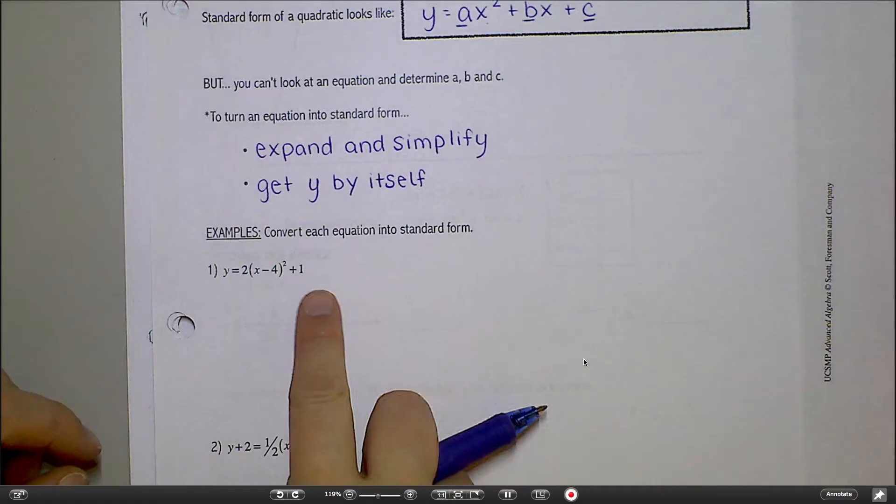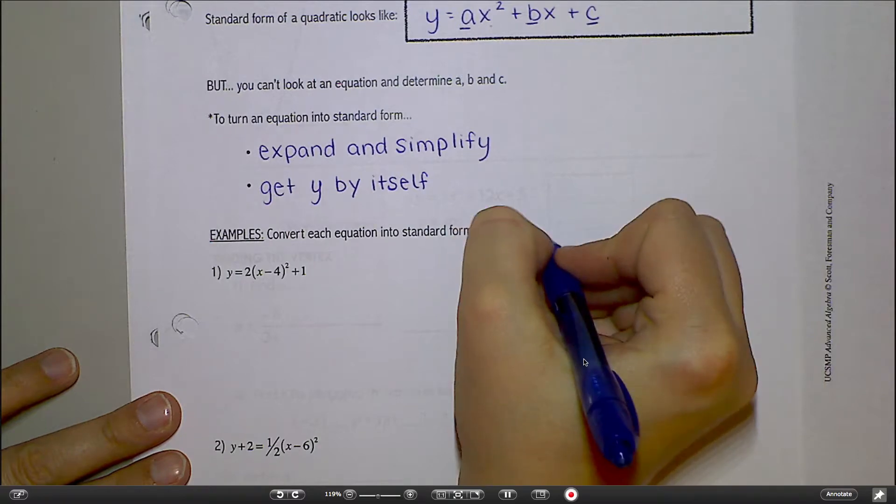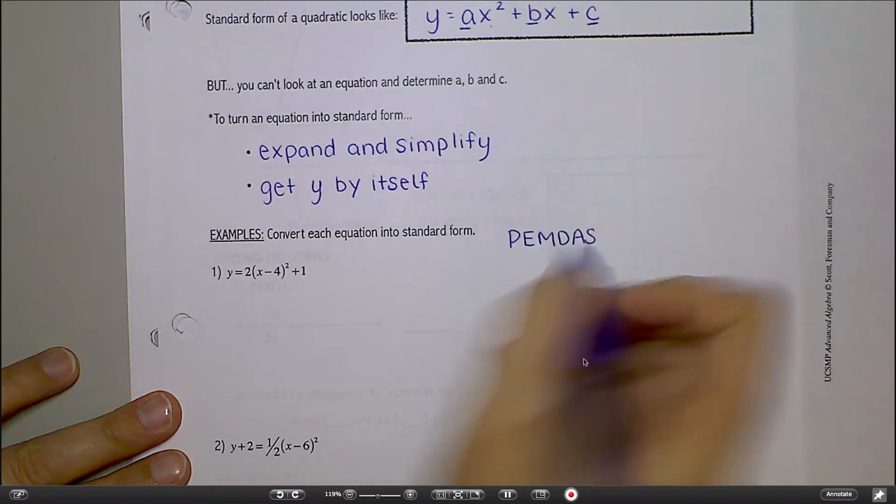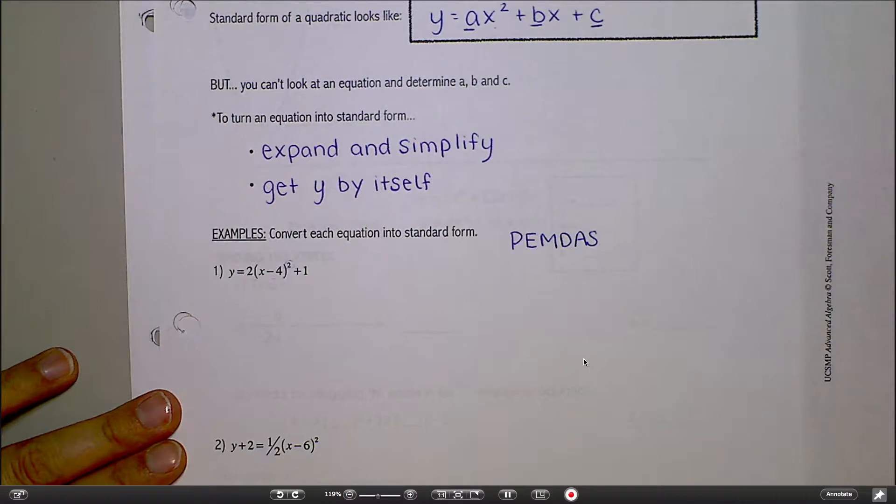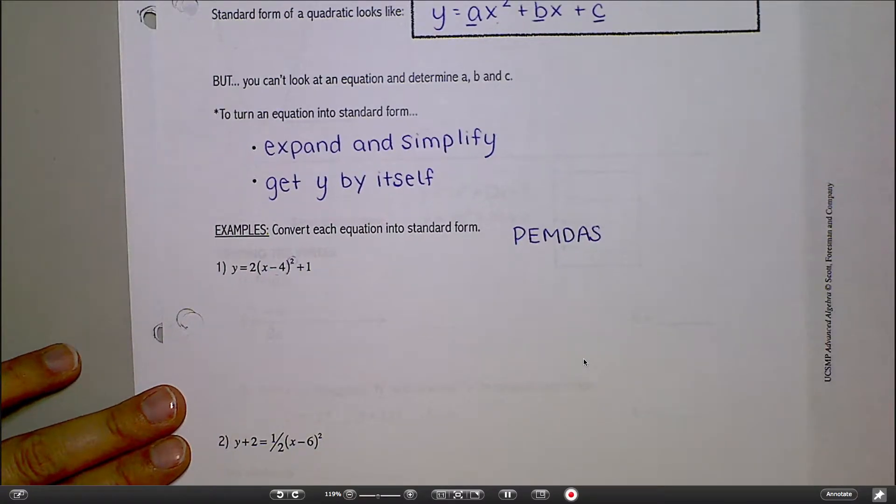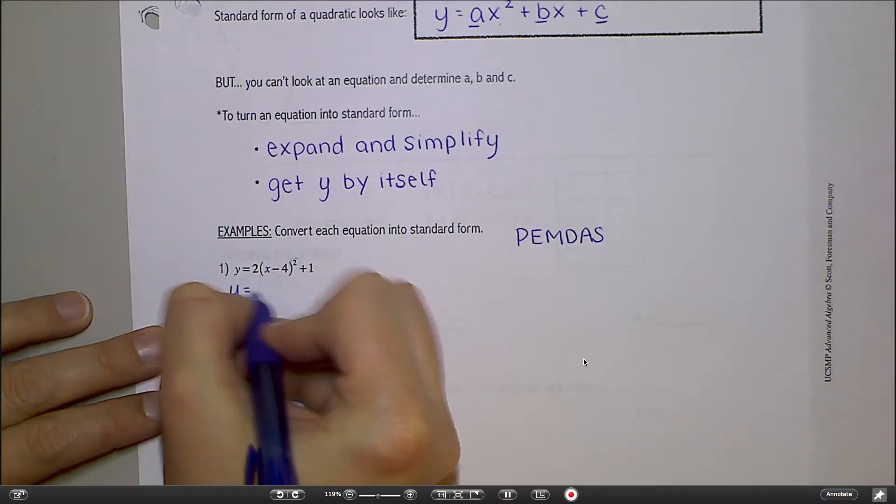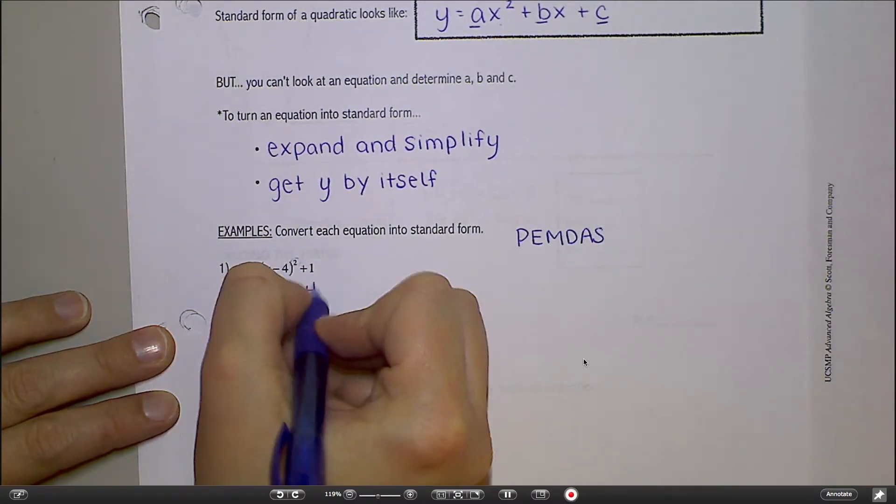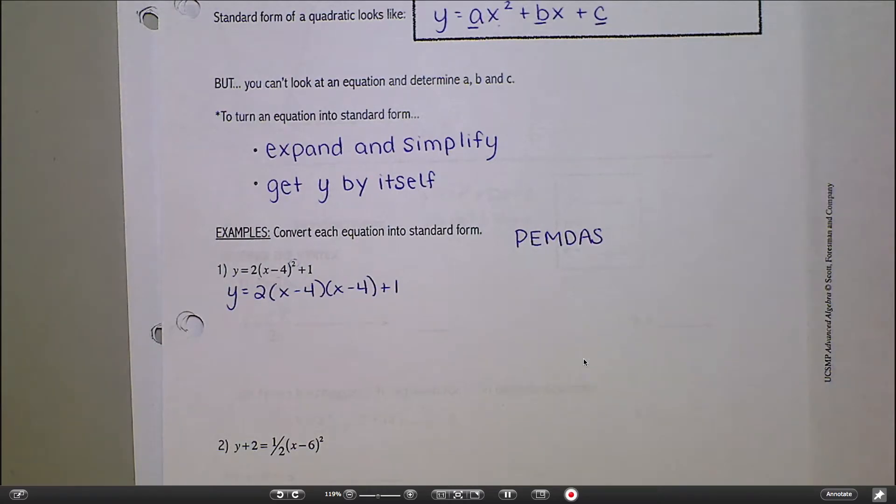To convert this into standard form, I'm going to work it out. So with PEMDAS, which means first I need to worry about this square on the parentheses here. How do I square X minus 4? Do you remember? Just a couple of lessons ago. Not square root. I'm not solving, I'm simplifying. Oh, yeah. You do it twice. Twice, yeah. So Y equals 2 times X minus 4 times X minus 4 plus 1.